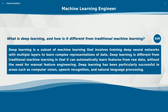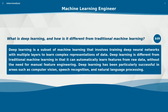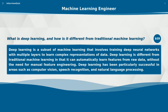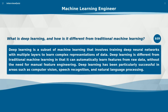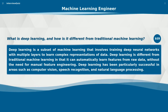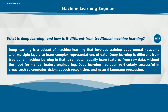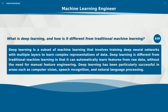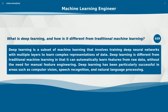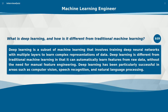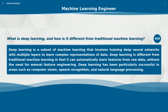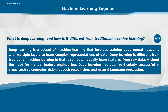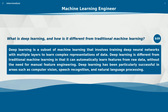What is deep learning and how is it different from traditional machine learning? Deep learning is a subset of machine learning that involves training deep neural networks with multiple layers to learn complex representations of data. Deep learning is different from traditional machine learning in that it can automatically learn features from raw data without the need for manual feature engineering. Deep learning has been particularly successful in areas such as computer vision, speech recognition, and natural language processing.